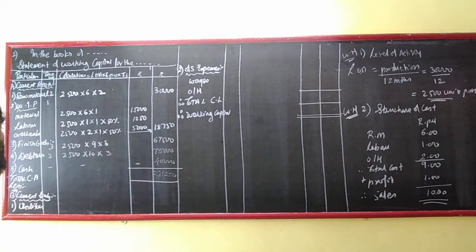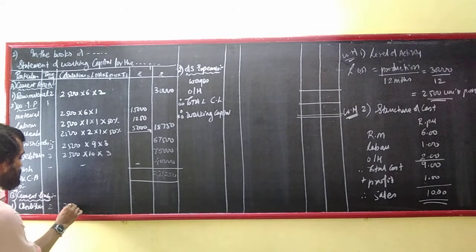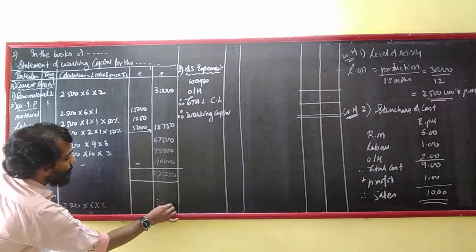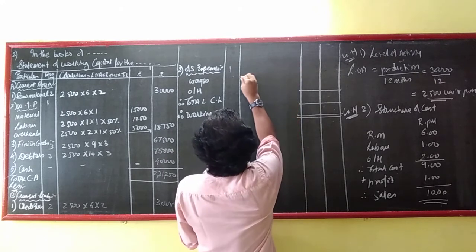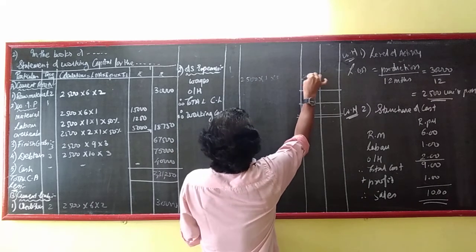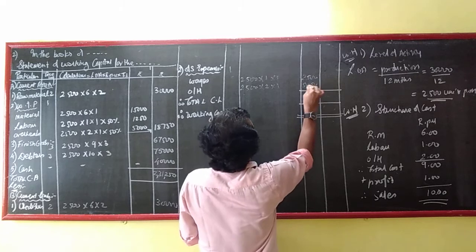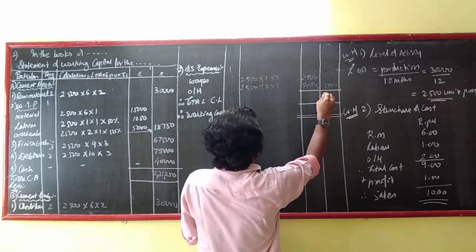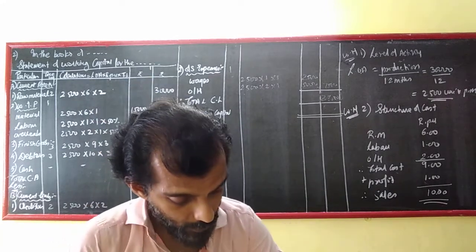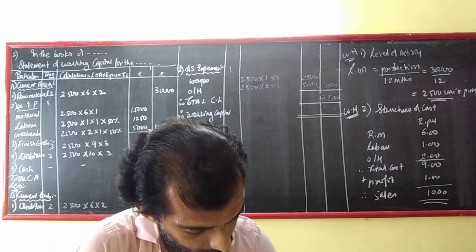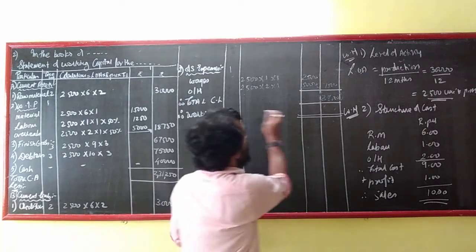Total current assets done. Now current liabilities: creditors for material for 2 months — 2,500 into 6 into 2 equals 30,000. Wages payable: 2,500 into 1 into 1 equals 2,500. Overheads payable: 2,500 into 2 into 1 equals 5,000. Total current liabilities equal 37,500.